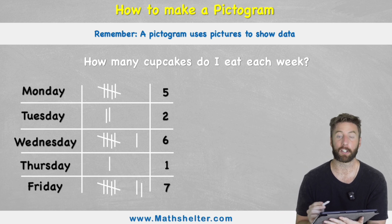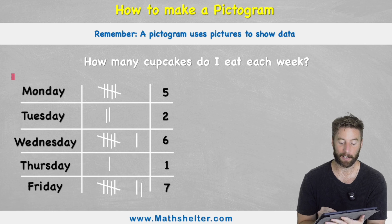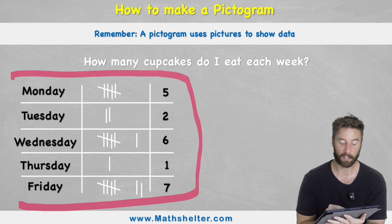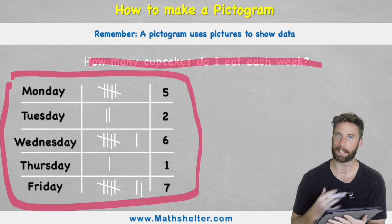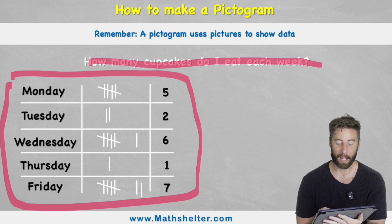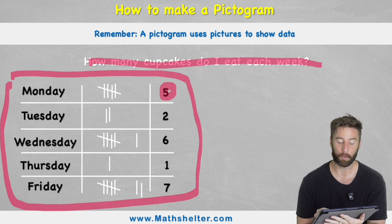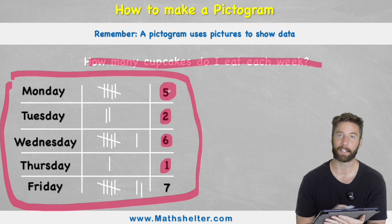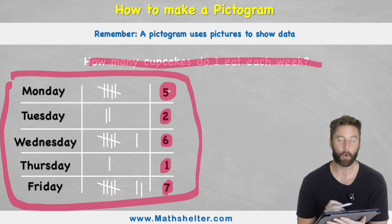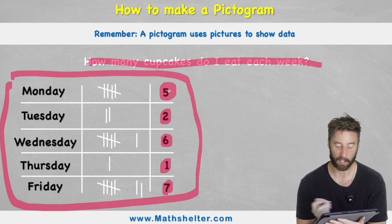Let's first look at something we might have seen already — this tally chart. So we can see the question: how many cupcakes do I eat every day? On Monday I have five cupcakes, on Tuesday two, Wednesday I have six, Thursday I have one, and then on Friday I really treat myself and I have seven cupcakes. So already we can represent that data using a tally chart, and we can see it here next to these numbers.